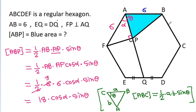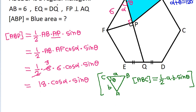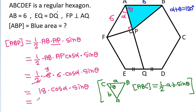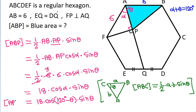So here, alpha plus theta will be equal to 120 degrees. Therefore, the area of ABP will be equal to 18 times cos(120° minus theta) times sin theta.